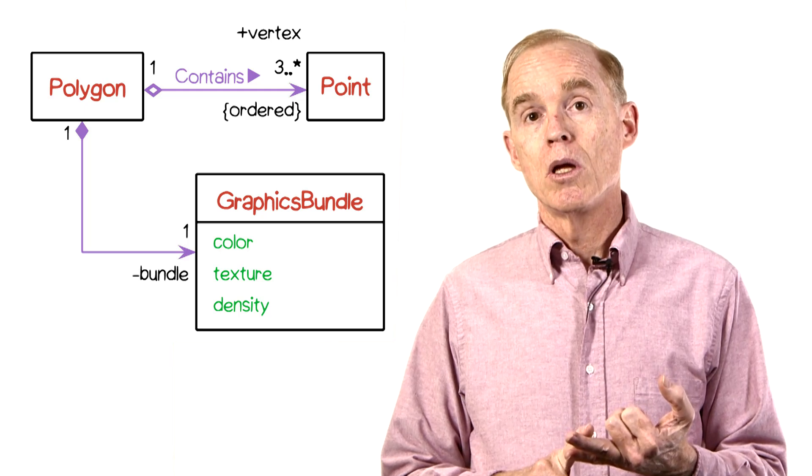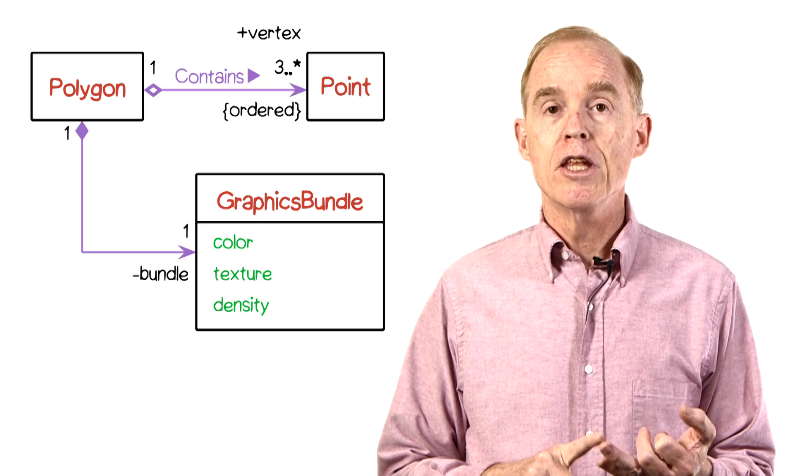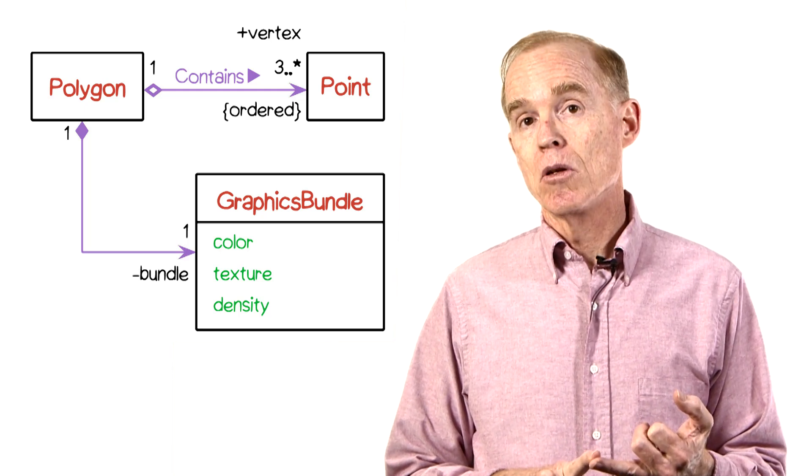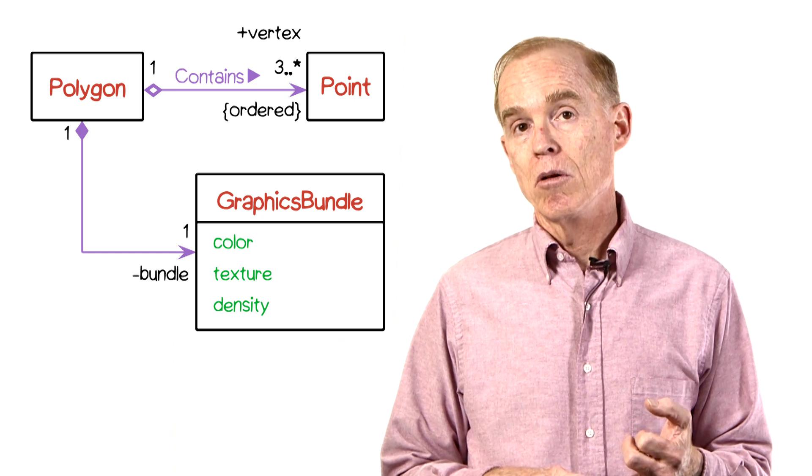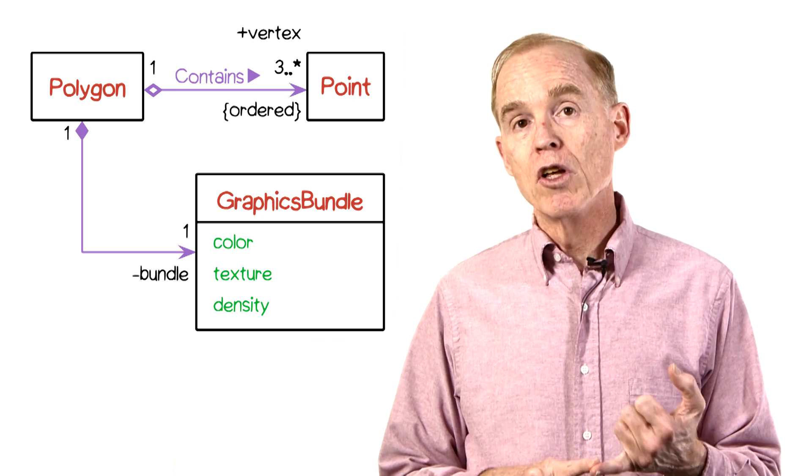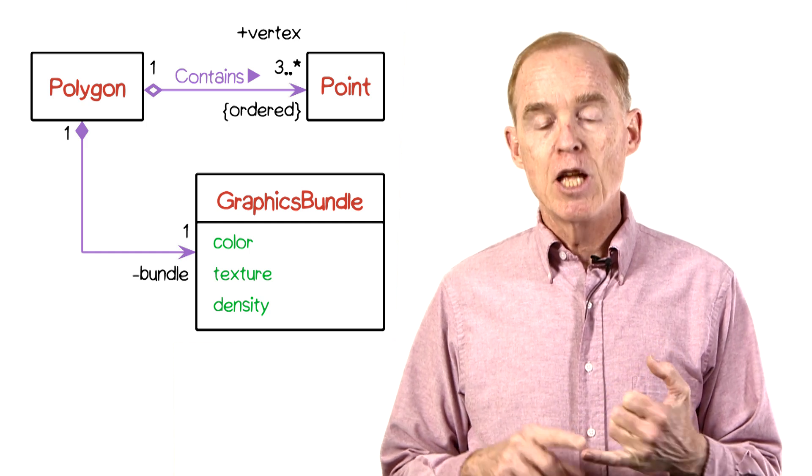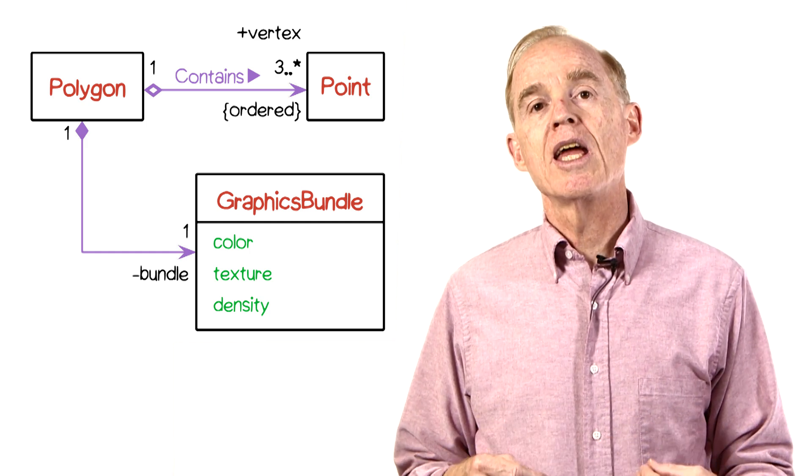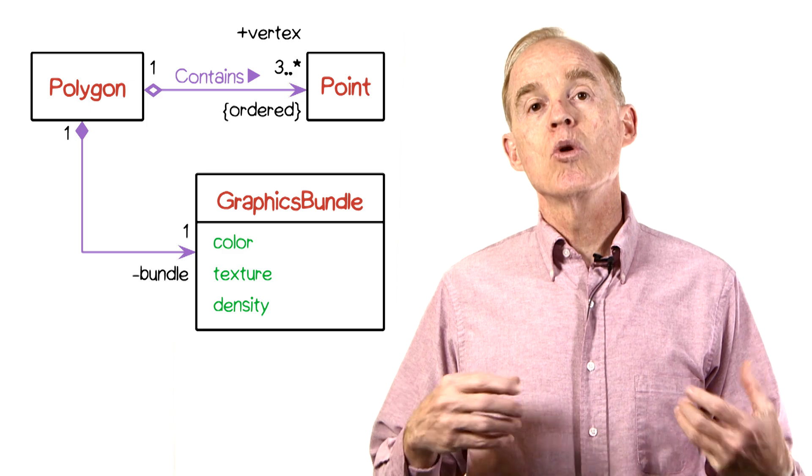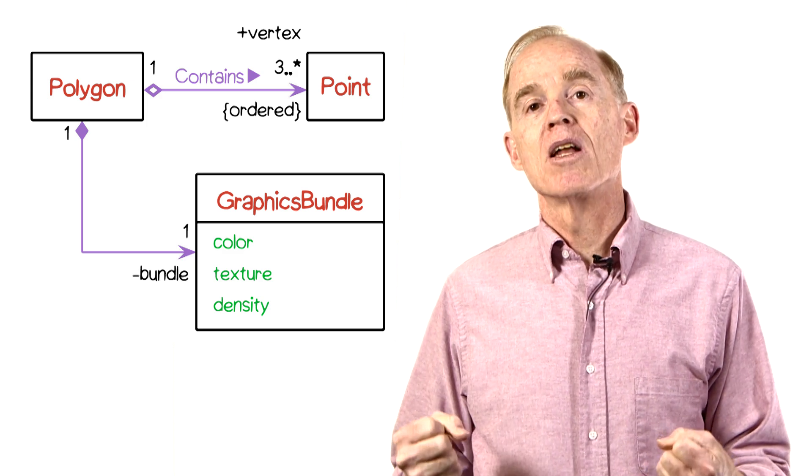In the example, we saw both of these. The open diamond indicated aggregation and the closed, that is, the filled diamond indicated composition. In both cases, we are saying that the two classes are related by some kind of containment relationship. That is, a polygon is made up of points.